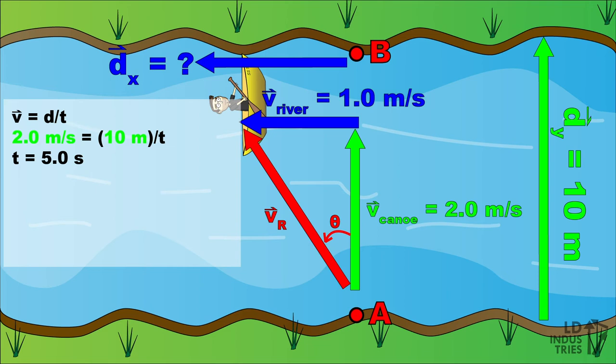After we know the time, we can do a second uniform motion calculation for the X direction. This time, we'll use the X velocity of 1 meter per second, along with the time to get the X displacement of 5 meters.